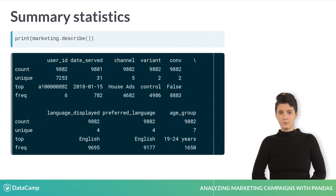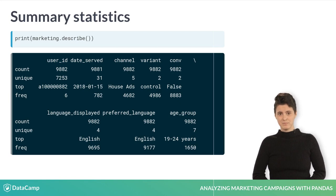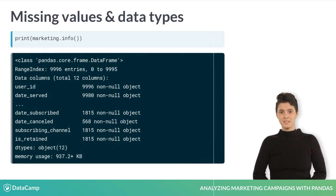Use the describe method to print the summary statistics of all columns in your dataset. You can inspect the output to find some obvious errors — for example, if you see negative values in a date column, this might indicate an error. Pay careful attention to the minimum and maximum values; if the maximum is much larger than the median, it might be an outlier and merit further investigation. Finally, you can identify the data types and number of non-missing values in your data frame using the info method.